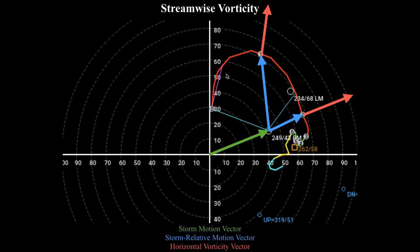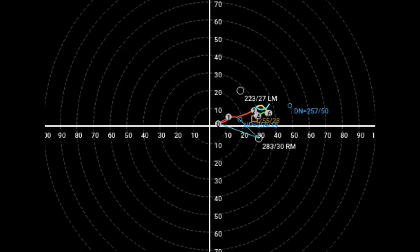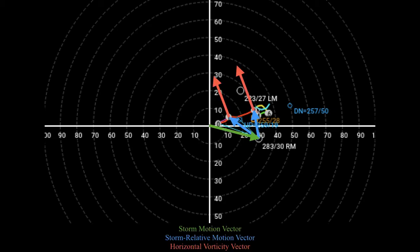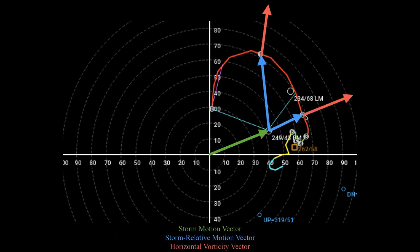Usually, you'll have a lot of streamwise vorticity when you've got a strong curvature in the hodograph. If the hodograph is pretty straight with not a lot of curvature, that indicates a lot of crosswise vorticity is present, which means you're going to get splitting thunderstorms. But if you've got really strong curvature in the hodograph, you're going to have a lot of streamwise vorticity, which means thunderstorms are taking in a lot of spinning air and are going to want to spin pretty rapidly. Spinning thunderstorms can be very consequential because a supercell with a lot of rotation is much more likely to produce a tornado, or even significant straight-line wind damage and large hail.